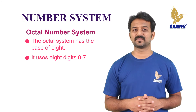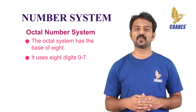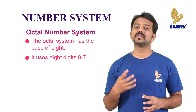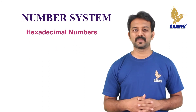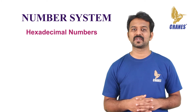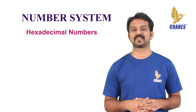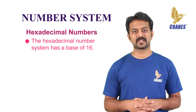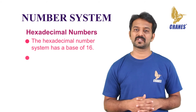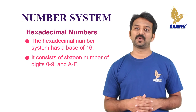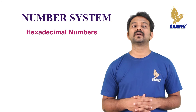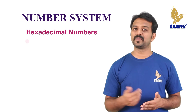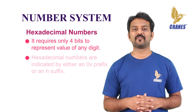Just like the hexadecimal system, the octal number system provides a convenient way of converting large binary numbers into smaller, compact groups. The hexadecimal number system is commonly used in computer programming and microprocessors. It has a base of 16, consisting of 16 digits: 0 to 9 and A to F. Hexadecimal numbers are much shorter than binary numbers, making them easy to write and remember. It requires only 4 bits to represent the value of any digit.